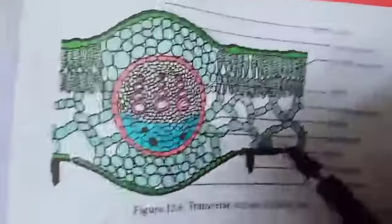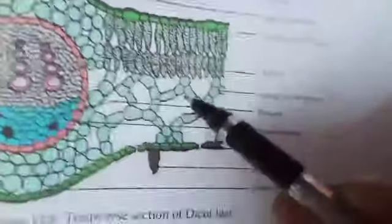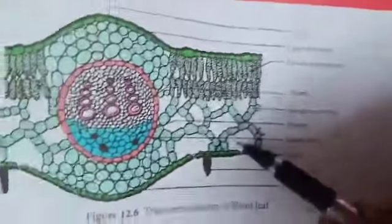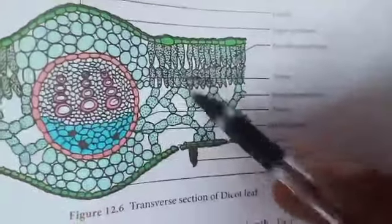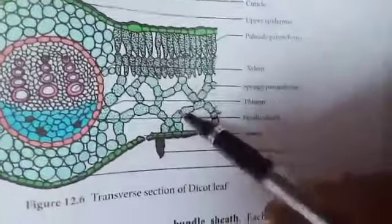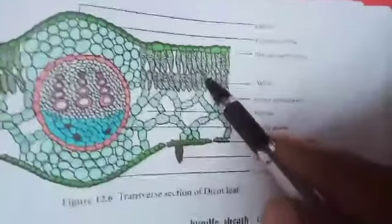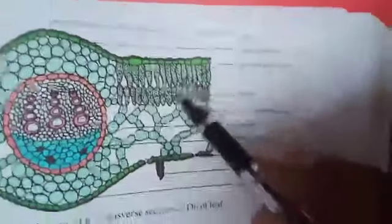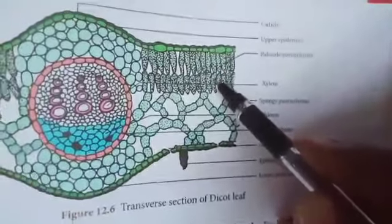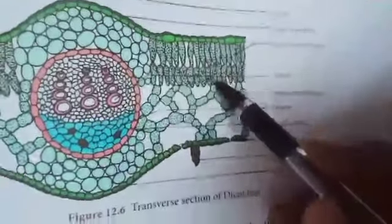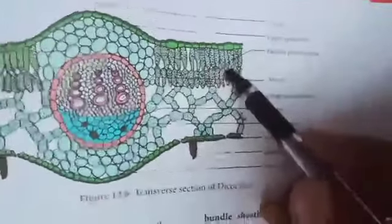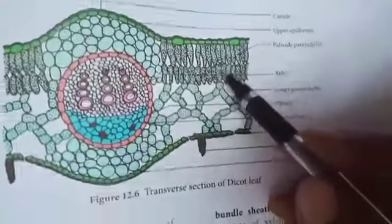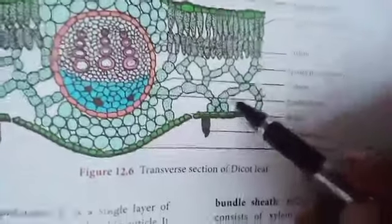Mesophyll tissue is present between the upper epidermis and lower epidermis. It is differentiated into palisade parenchyma and spongy parenchyma. Palisade parenchyma is found just below the upper epidermis. The cells are elongated with more chloroplasts and without intercellular spaces. Its main function is photosynthesis due to the large number of chloroplasts present.